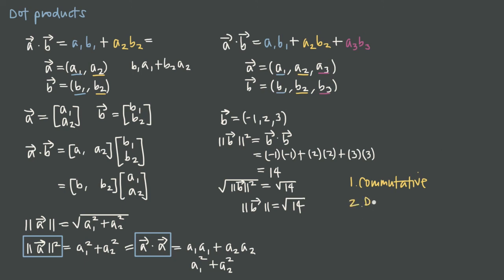The dot product is also distributive. If we have vector a dotted with the sum of vectors b and c — written as a·(b + c) — we simply distribute a across b and c, maintaining the dot product: a·(b + c) = a·b + a·c. That's the distributive property, and it holds for the dot product.